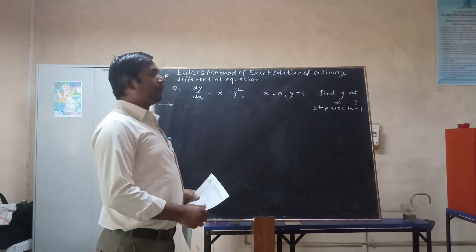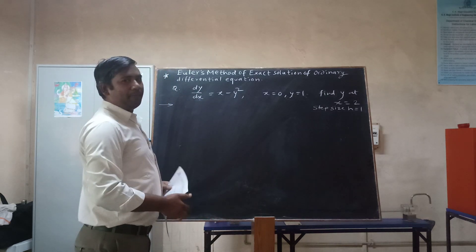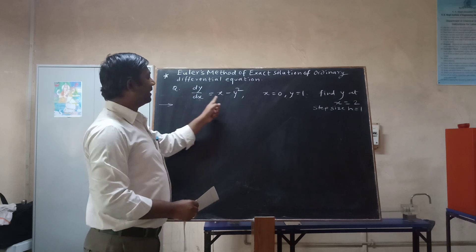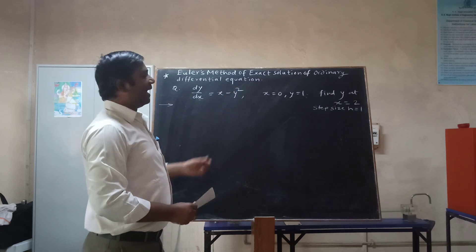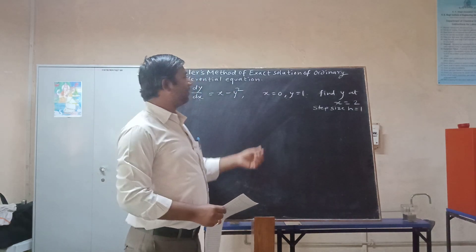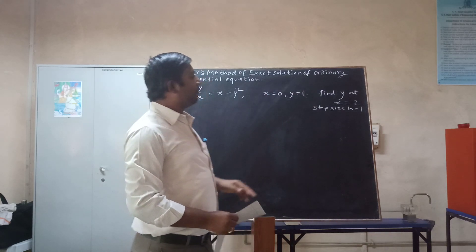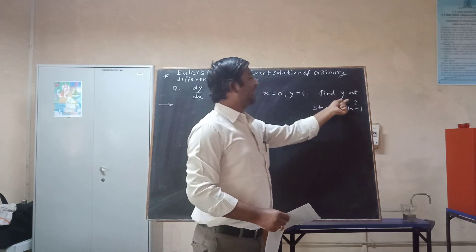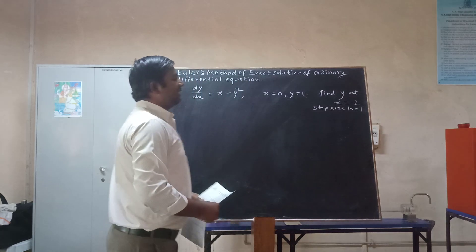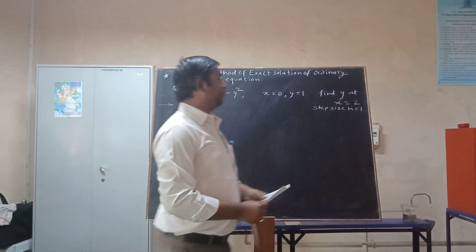This is one of the numerical methods. If you are given the problem dy/dx = x minus y squared, with initial conditions x=0 and y=1, and you want to find y at x=2, with step size h=1.